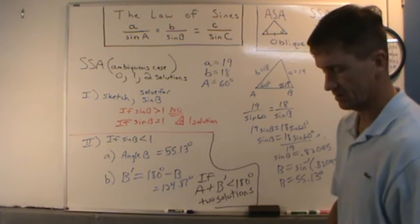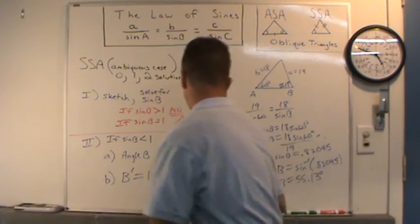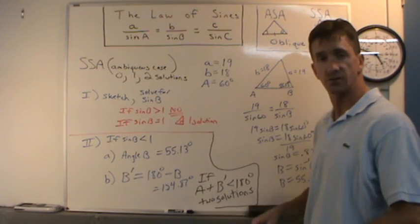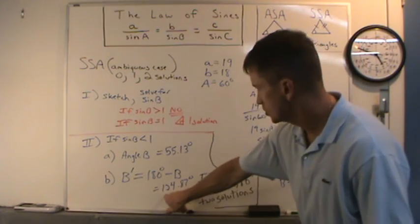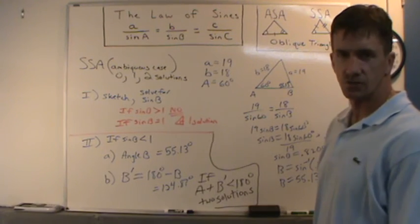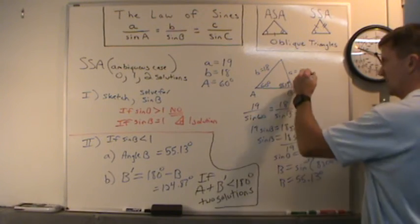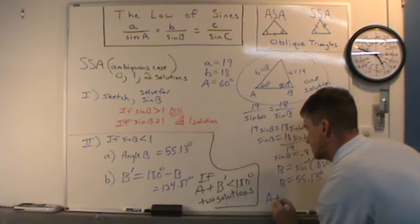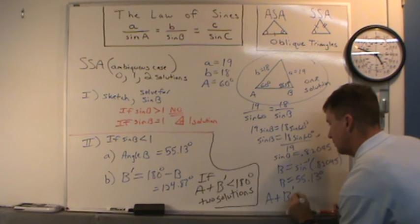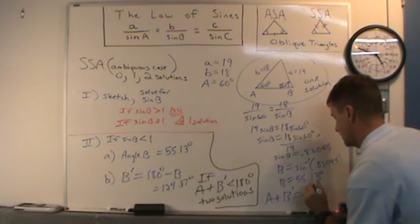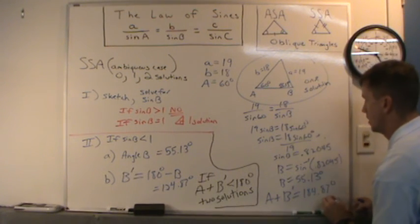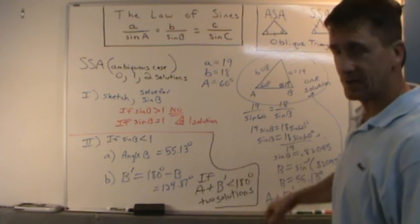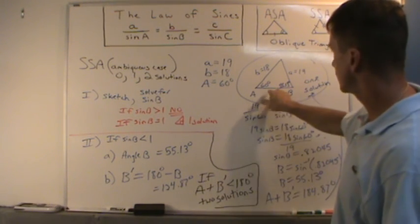Now check A plus B prime: 124.87 plus 60 equals 184.87 degrees. That is greater than 180, so there is only one solution to this problem. To finish: use 180 minus the two known angles to get the third angle, then apply the law of sines to find the remaining side.